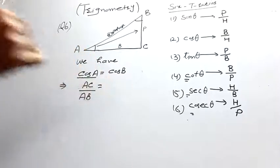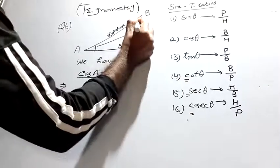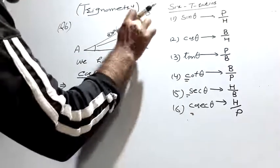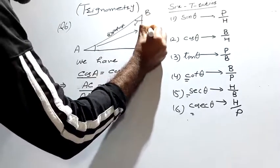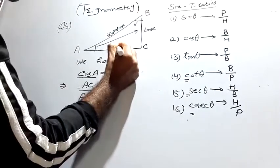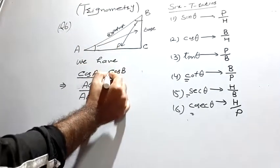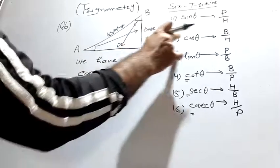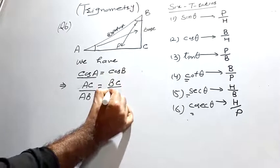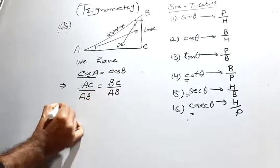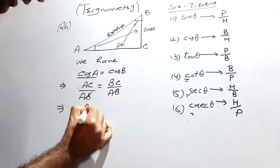Similarly, cos B is equal to base upon hypotenuse. For angle B, the perpendicular changes and the base changes. The base opposite to angle B is BC and its perpendicular is AC. So cos B equals BC upon hypotenuse AB.